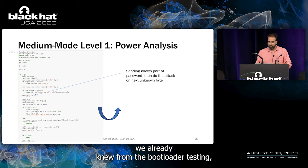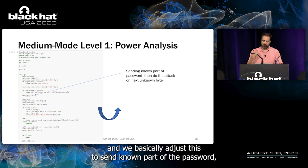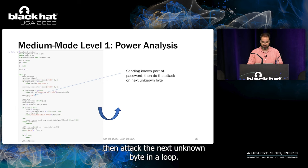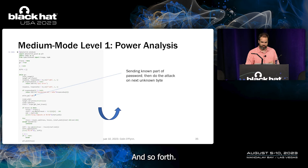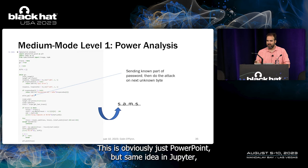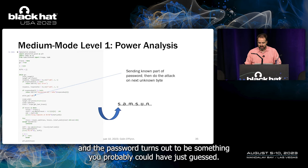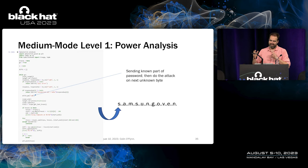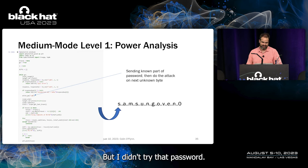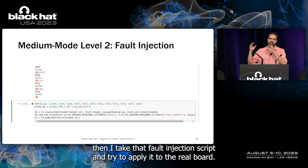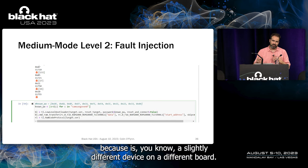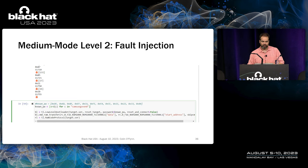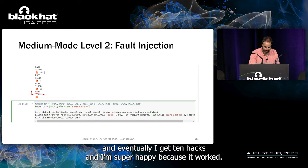Using what we learned from bootloader testing, we iteratively attack each password byte: send the known portion, attack the next unknown byte in a loop. The password turns out to be something you probably could have just guessed — but I didn't try it. For the second part, I take the fault injection script and apply it to the real board. The timing varies slightly due to the different board, but eventually I get hex 0x10 back and I'm excited — it worked.